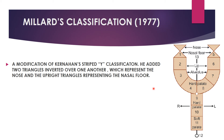Millard's classification is a modification of Kernahan's Striped Y, adding two inverted triangles representing the nose and nasal floor, extending the numbering from 1–9 to 1–11. Numbers 1 and 5 become the nasal floor, 2 and 6 are lips, 3 and 7 are alveolus, 4 and 8 are hard palate anterior to the incisive foramen, 9 and 10 are hard palate posterior to the incisive foramen, and 11 is the soft palate.